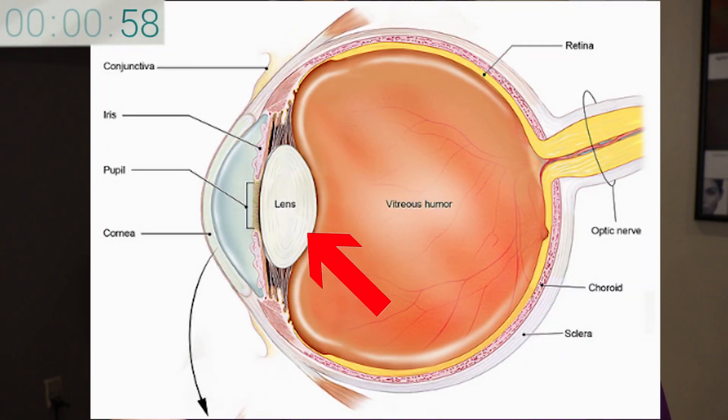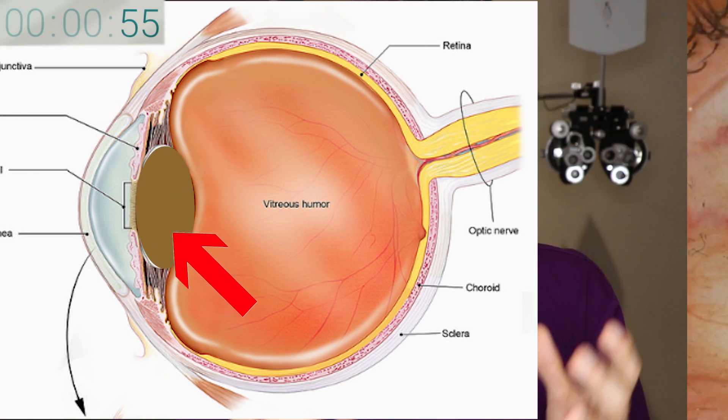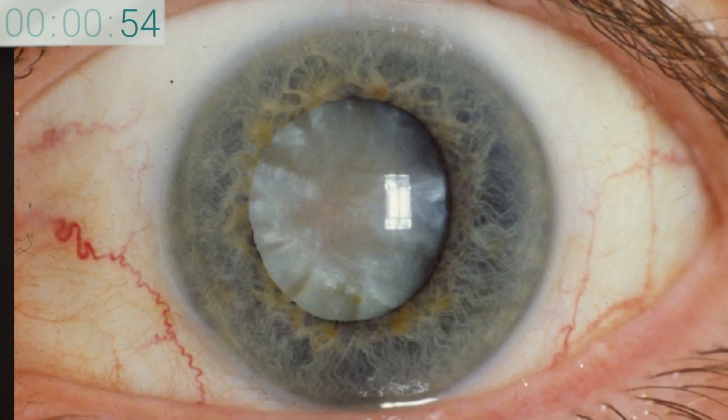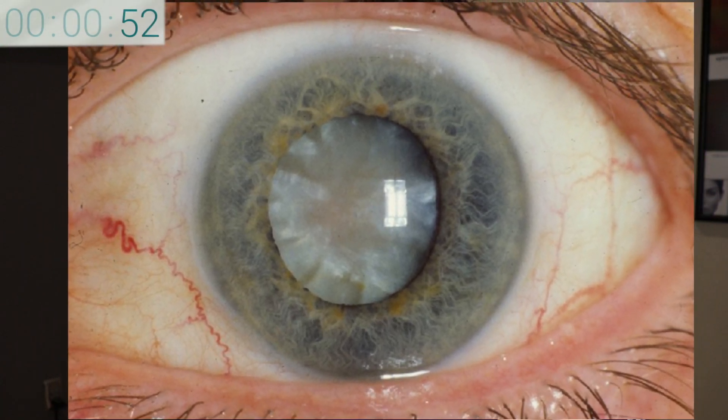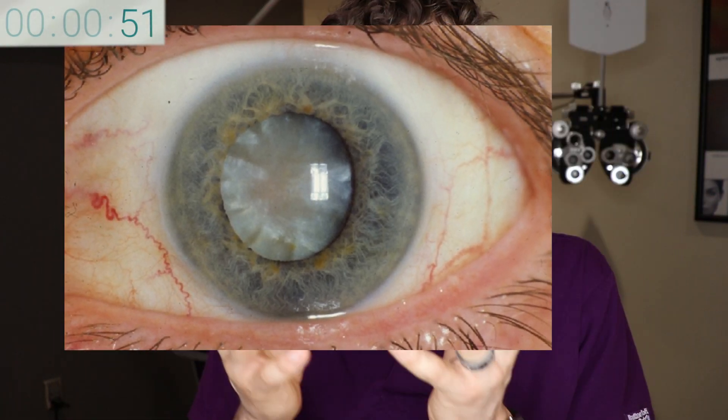We're going to do a one-minute answer video from an eye doctor on exactly what is a cataract. A cataract is when the crystalline lens inside of the eye becomes cloudy and opaque, making it harder to see. Some people are born with congenital cataracts, others get it from trauma, surgery, medications, or other conditions like diabetes.